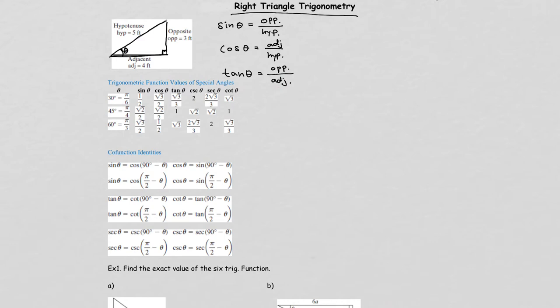Sometimes it's hard to remember, so I will show you two ways of doing it. The first method I'm going to show — the easier way to remember these ratios — is using the first letter: S-C-T.